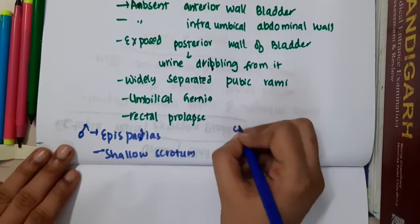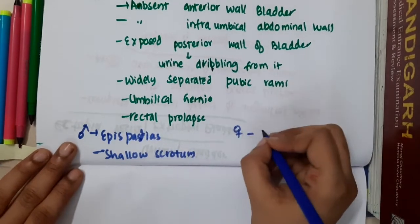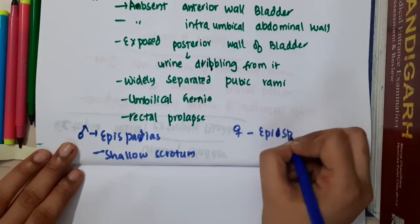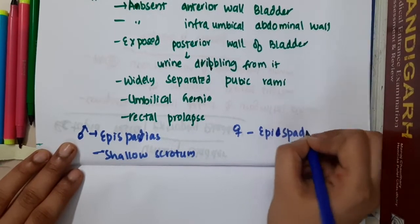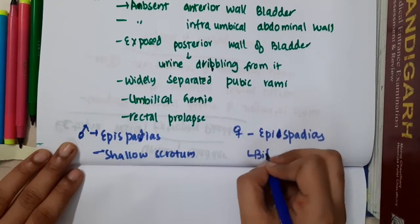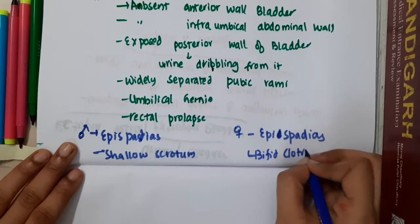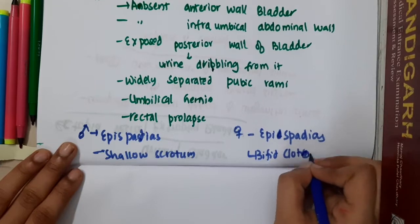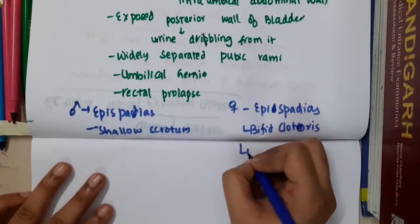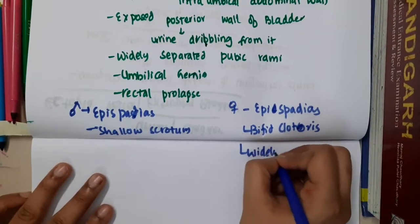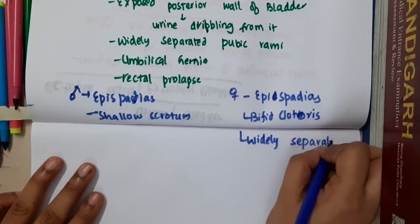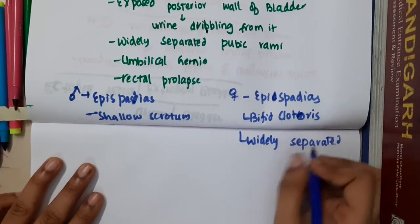Whereas in females, the patient will also have epispadias, bifid clitoris, and widely separated labia.